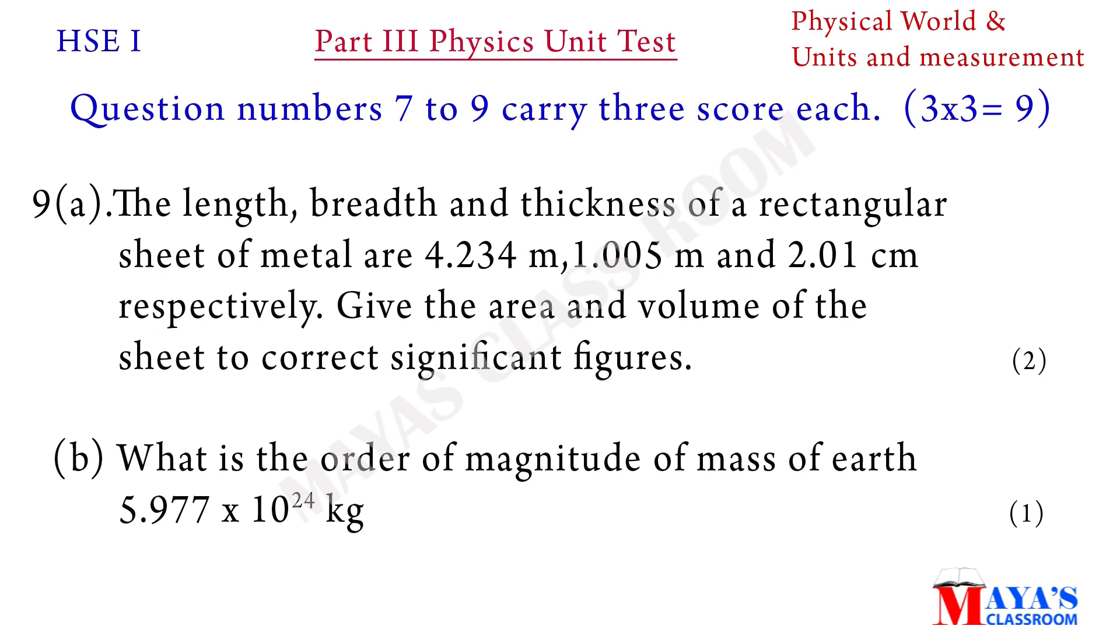Ninth question: the length, breadth, and thickness of a rectangular sheet of metal are 4.234 meter, 1.005 meter, and 2.01 centimeter respectively. Give the area and volume of the sheet to correct significant figures. B part: what is the order of magnitude of mass of earth, 5.977 into 10 raised to 24 kilogram?